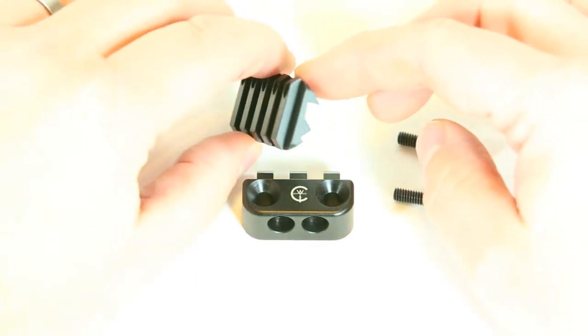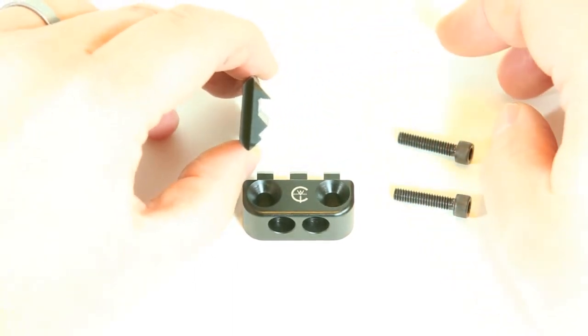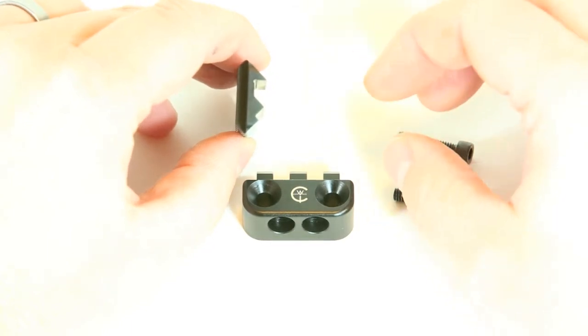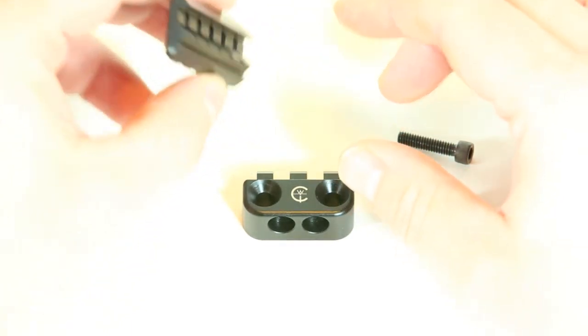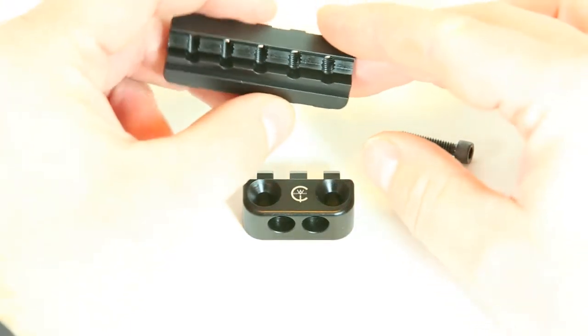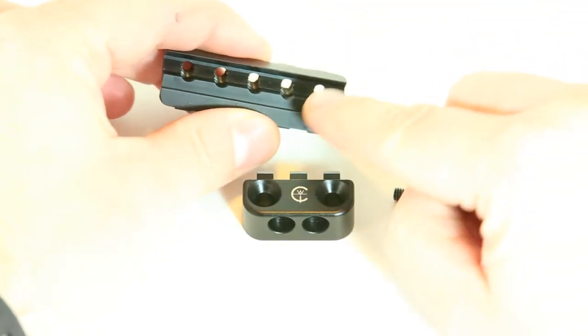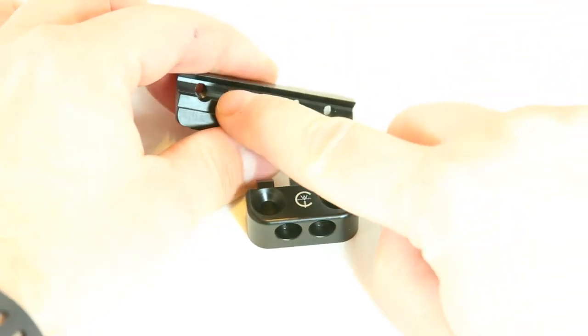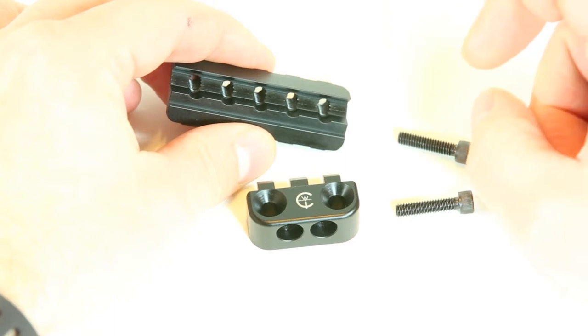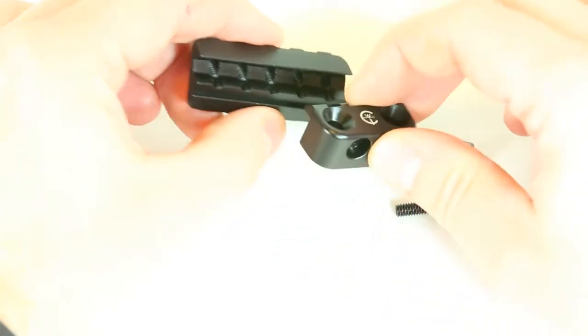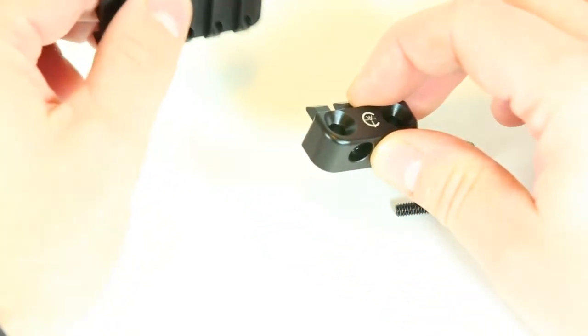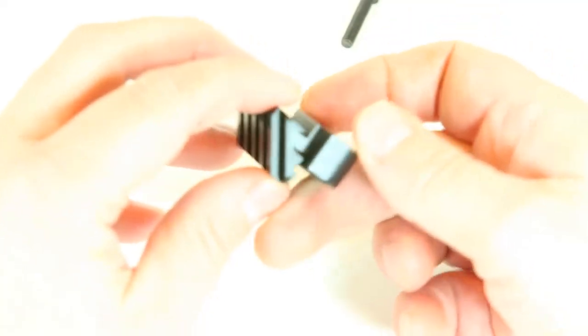The Picatinny rail section is about three, three and a half inches long. It's pretty well standard and should fit most if not all of the offset rail systems made by Impact Weapons Components. It has five different areas that you can mount your screws and your proprietary mounting system to.